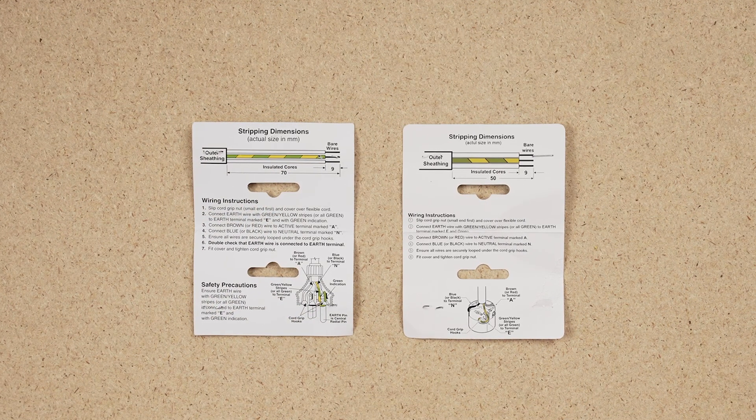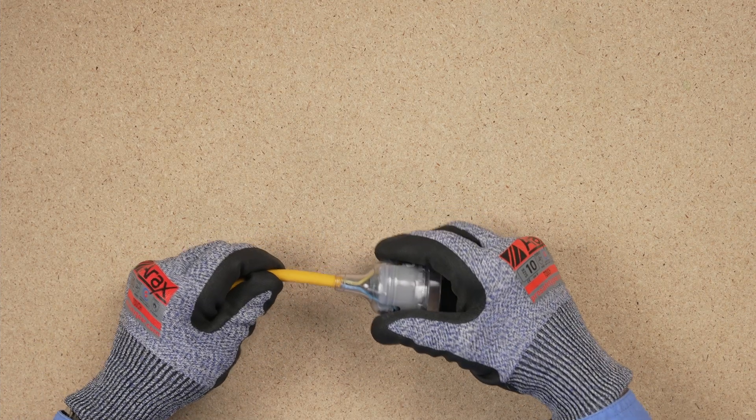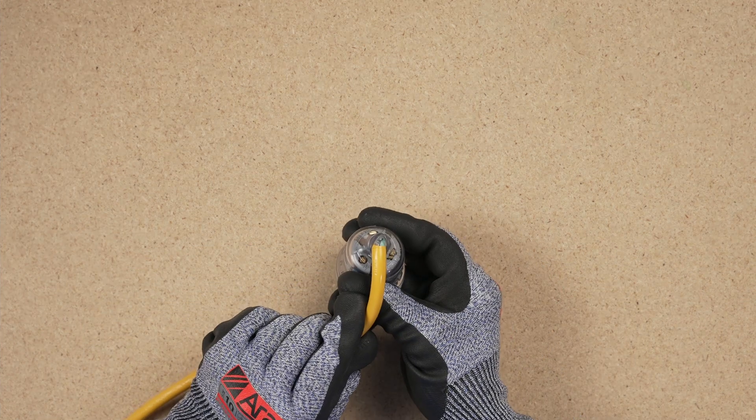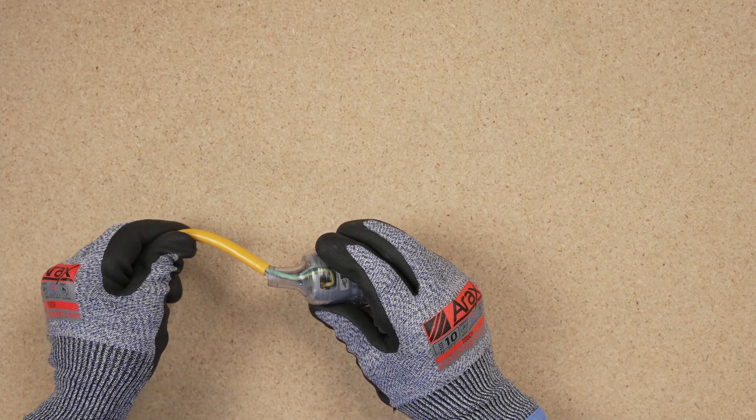However, this is not always the case. You must be able to determine this. Be careful. Removing too much outer sheathing may expose unprotected conductors outside protective shrouds or cord breaks.